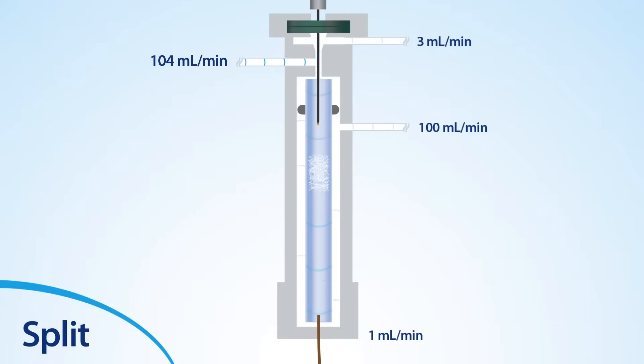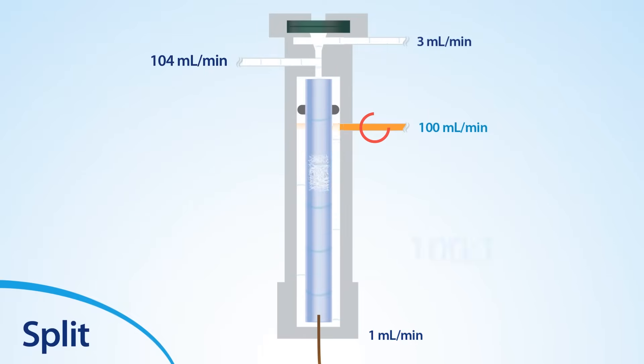During injection, the sample is injected into the liner and vaporizes. Since our example has a high split ratio of 100:1, one part goes onto the column, while 100 parts of the sample exit out the split vent.